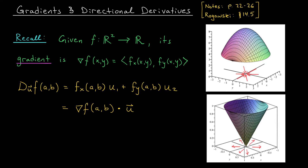Specifically, given a function f from R² to R, or more generally from Rⁿ to R, we define its gradient, del f, to be the vector of its partial derivatives. The gradient is really a function — in this case it takes in two inputs, x and y, and spits out an entire vector of outputs. This means that at every point in the xy-plane, our gradient function gives us a gradient vector, del f at xy.